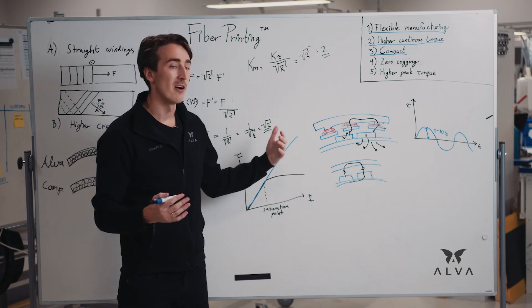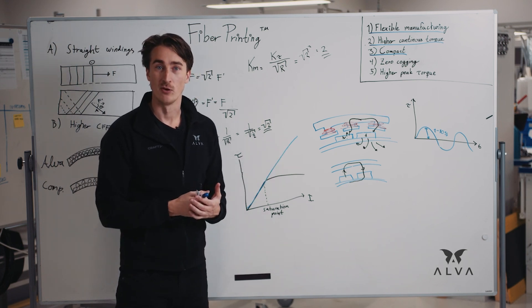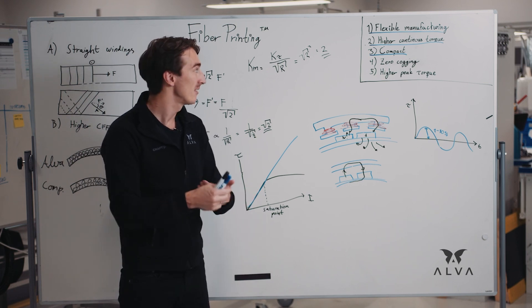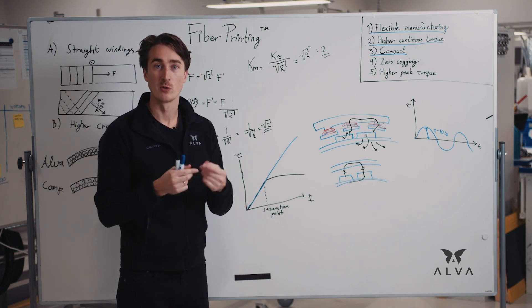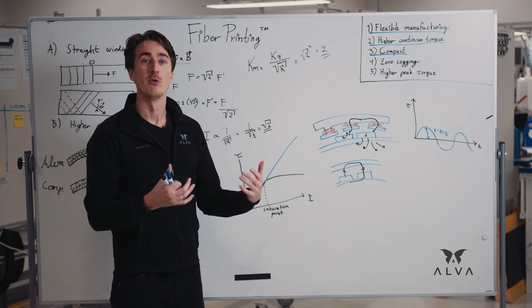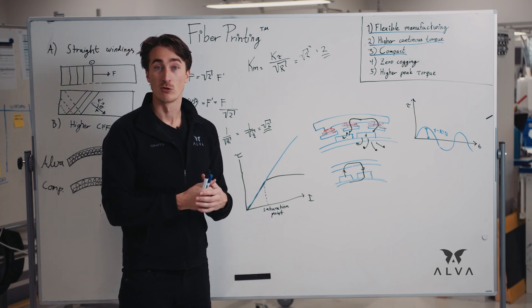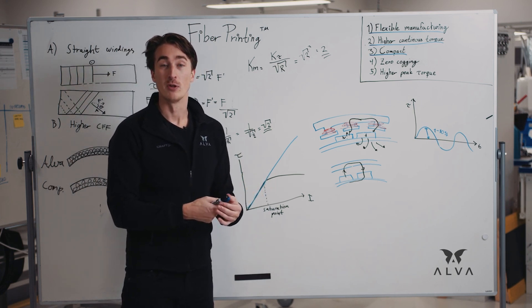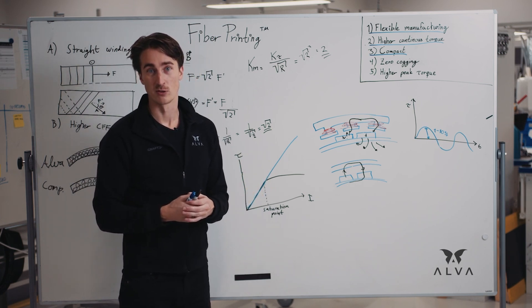So these are the five main benefits of fiber printed motors. You have the flexibility, the high continuous torque, which means we have the performance and torque of slotted iron core motors with the precision of slotless motors.